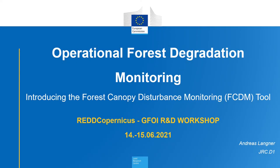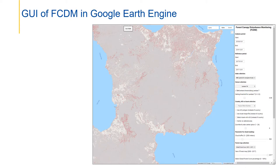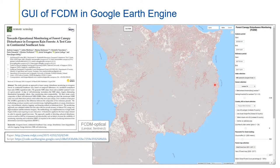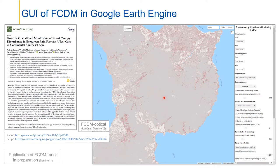Hello, my name is Andreas Langner and I'm working at the GSC. My talk is about operational forest degradation monitoring, and I'd like to introduce the Forest Canopy Disturbance Monitoring tool, or FCDM tool. This slide shows a screenshot of the graphical user interface of the FCDM tool as implemented in Google Earth Engine. On the right-hand side are the parameters to be entered; on the left-hand side you see the results in red, showing indications of logging roads in Papua New Guinea. This data is based on a combination of Landsat 7 and Landsat 8.